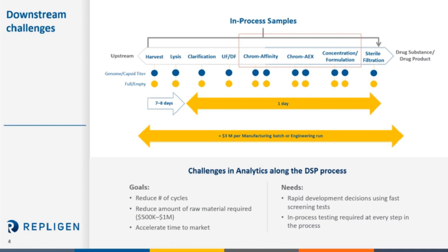Today we're focusing on samples collected post-UFDF for purified material. Our goal is to reduce the number of cycles, reduce the amount of raw material required, and accelerate time to market by providing a very quick analytical measurement to make real-time decisions. It is our hope that in-process testing required at every step can be done quickly, accurately, and repeatedly, and limit the cost of detecting viral titer concentration using current techniques.